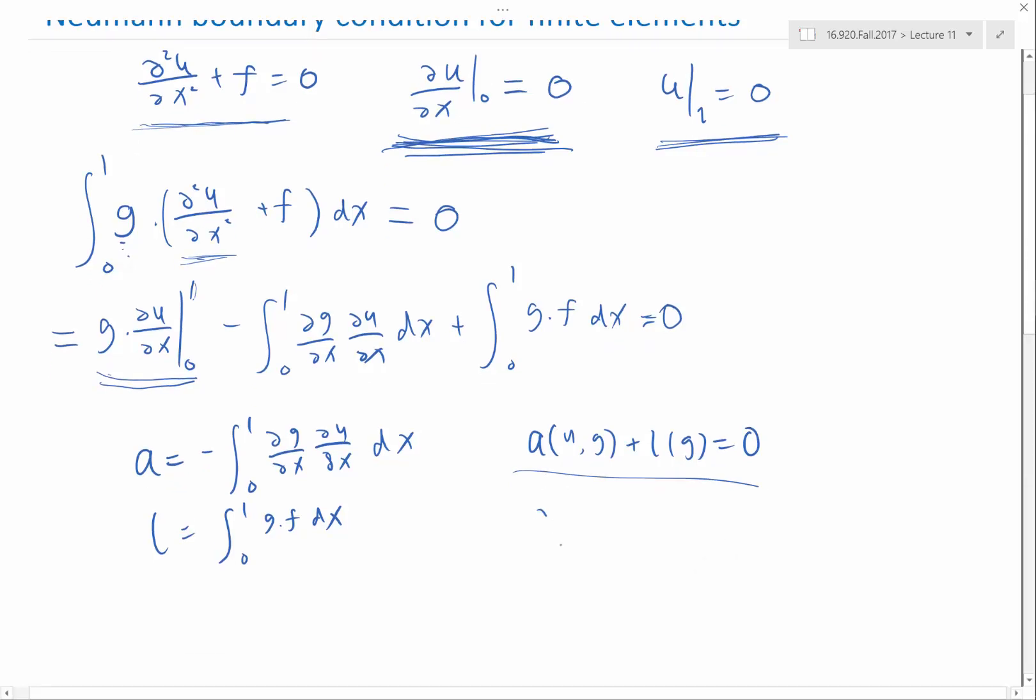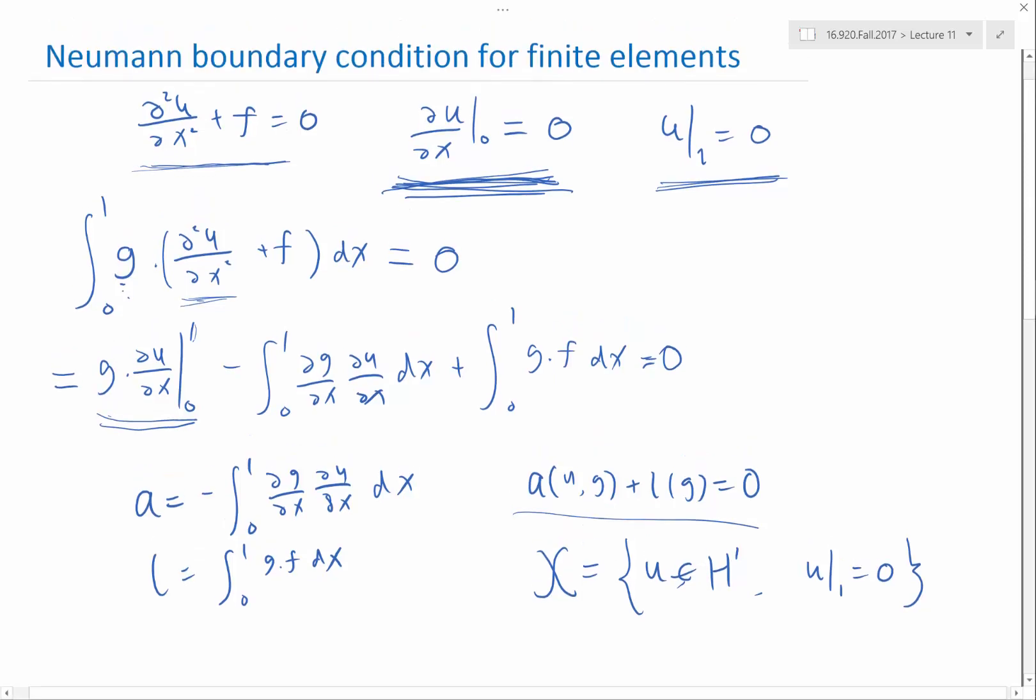So in this case, my linear space x is all the u's within H1, again, that only needs to satisfy the right-hand side boundary condition.